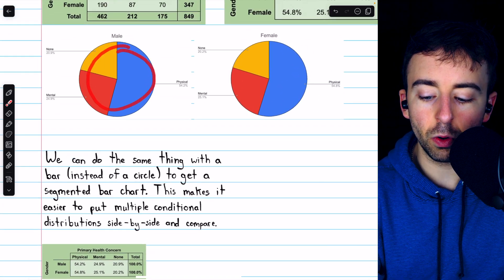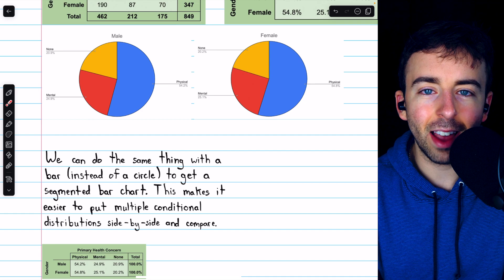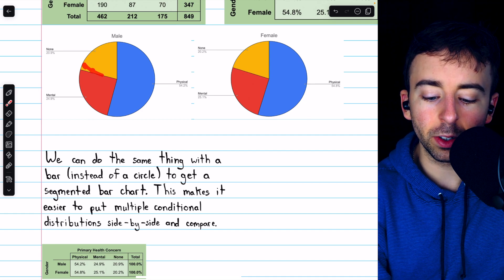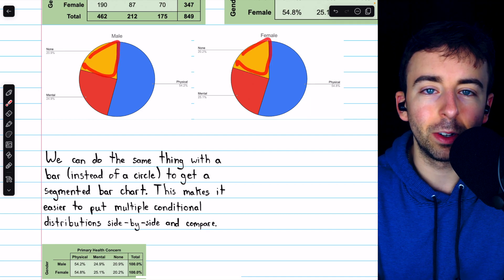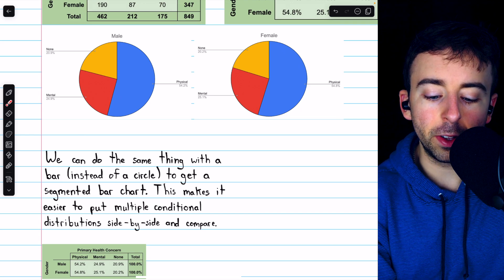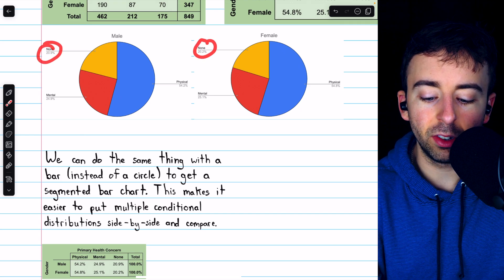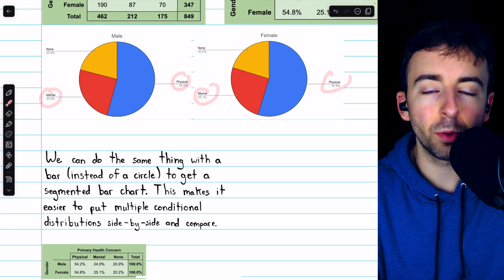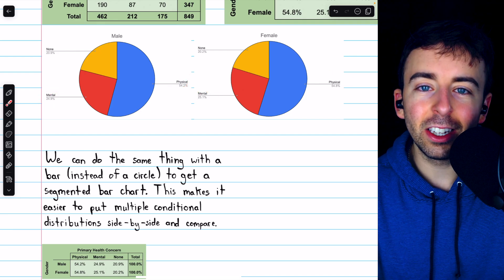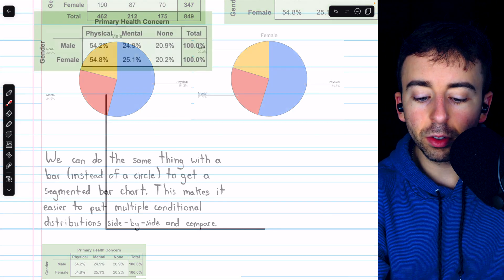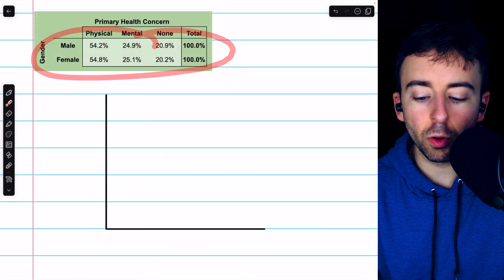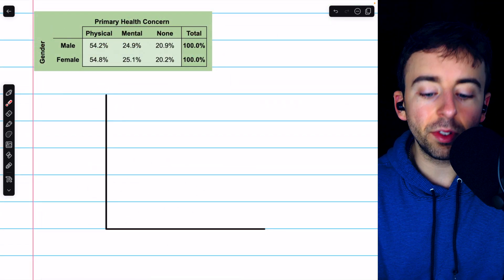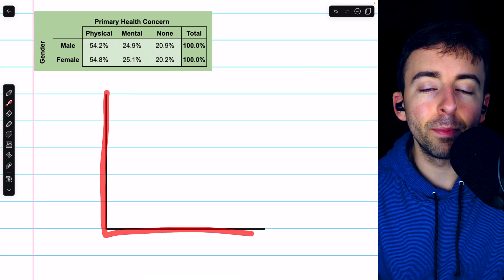We can see that we could put these two pie charts directly side by side, but it's a little bit difficult to directly compare the different slices. It's made easier in this case because the chart happens to include exact percentage labels, but those aren't always present, and that doesn't really contribute to the picture. It just gives us more information. So let's take those same conditional distributions from before and use it to construct a segmented bar chart.